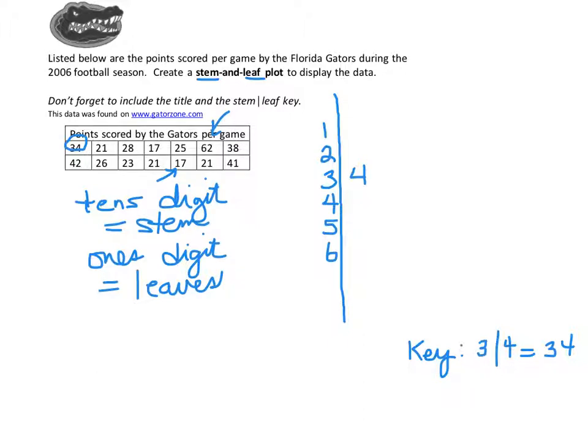That way people know how to read our stem and leaf plot. So then we'll go through and finish off all the rest. So we have a 21, a 28, a 17, a 25, a 62, a 38, a 42, 22, 26, 23, 21, 17, 21, and 41.